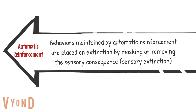Behaviors maintained by automatic reinforcement are placed on extinction by masking or removing the sensory consequence, also known as sensory extinction. As mentioned, this is not recommended for problem behavior. Even self-stimulatory behaviors can be maintained by social consequences or negative reinforcement.